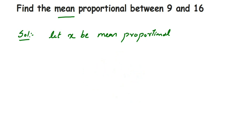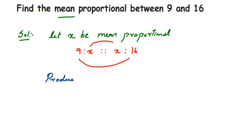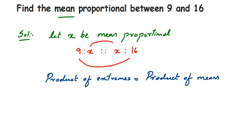So writing this in ratio form: 9 is to x is in proportion with x is to 16. Here 9 and 16 are the extremes and x is the mean. Since they are in proportion, the product of extremes equals the product of means. That gives us 9 × 16 = x × x.